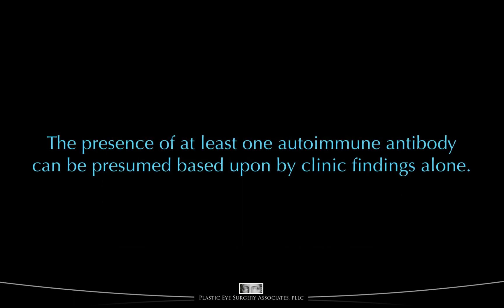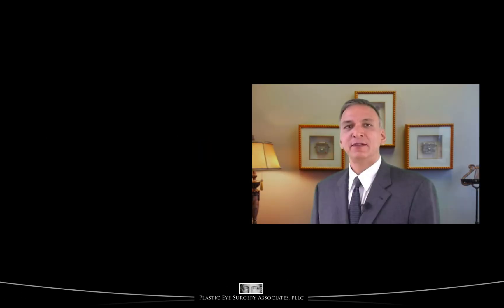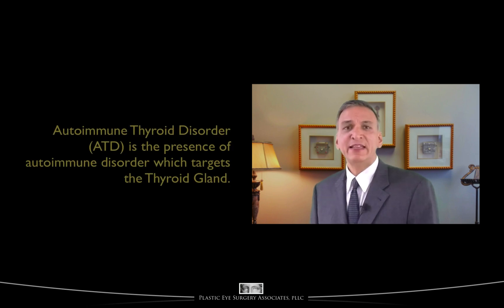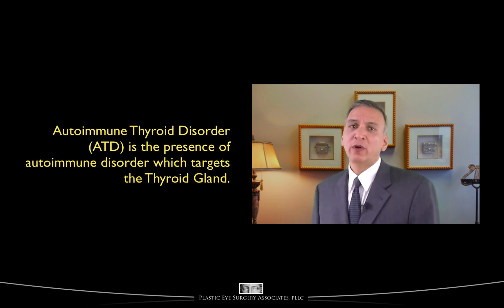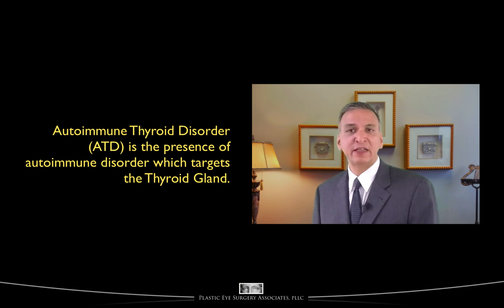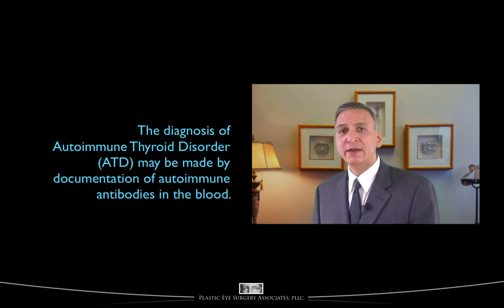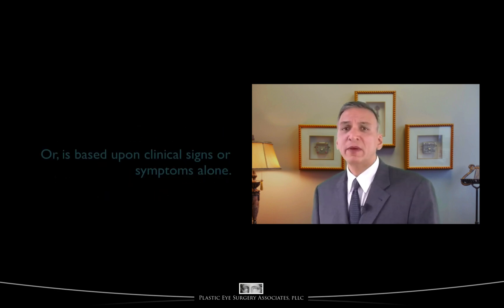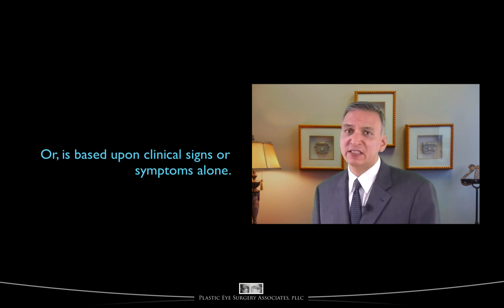The presence of at least one autoimmune antibody can be presumed based upon clinical findings alone. For clarity, ATD is the presence of an autoimmune disorder where one of the target organs is the thyroid or thyroid hormone production process, but that does not necessarily mean that a thyroid hormone abnormality is seen. A diagnosis of ATD may be made by documentation of the presence of one or more autoimmune antibodies in the blood, or it may be based upon clinical signs and symptoms alone.